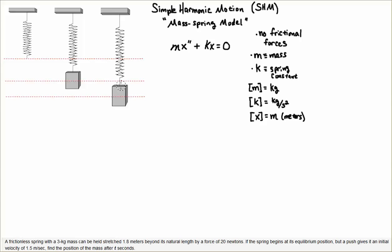But a push gives it an initial velocity of 1.5 meters per second. This is a pull, so I'll fix this picture, but it's going to be pushed upward. We're going to find the position of the mass after t seconds. I choose down to be the positive direction, in the direction of gravity. If you choose up to be the positive direction, your solution will differ from mine by a sign.